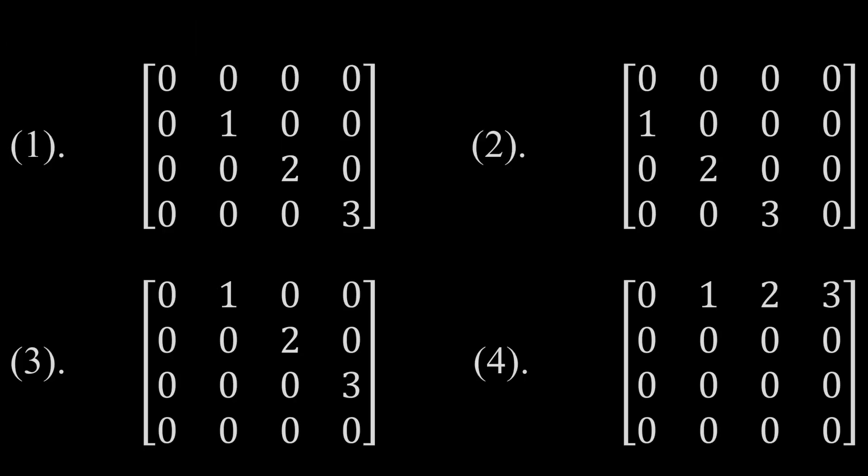Option 1 is a 4×4 matrix with elements: 0 0 0 0 / 0 1 0 0 / 0 0 2 0 / 0 0 0 3. Option 2 is a 4×4 matrix of all zeros.